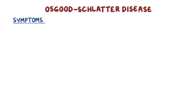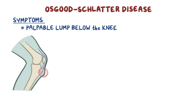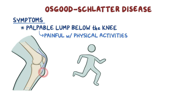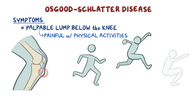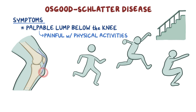Symptoms of Osgood-Schlatter disease include a palpable lump below the knee, which gets very painful with physical activities like running, jumping, squatting, and especially when going up or down stairs, or when the knee gets hit by something.